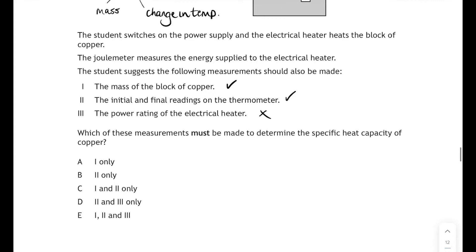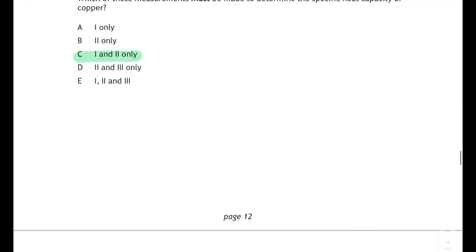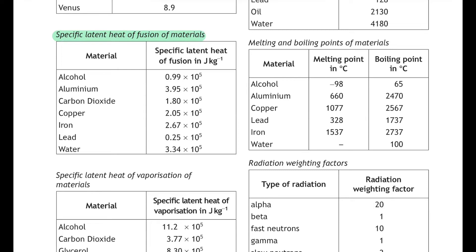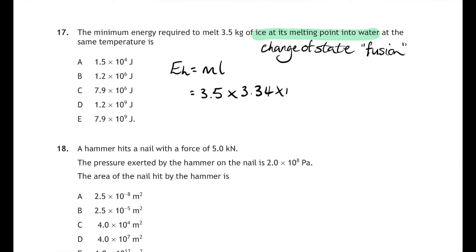Moving on then, question 17: the minimum energy required to melt 3.5 kilograms of ice at its melting point into water at the same temperature. Well, this is a change in state question, and it's the solid to liquid or fusion state change. So let's write the relationship down: E_h equals ml. m is the mass 3.5, and l is the specific latent heat of fusion of water. So we're looking for that number 3.34 times 10 to the 5 joules per kilogram. Let's sub that in, and if you do that on your calculator, you'll get an answer of 116,900 joules, which if you put in the standard form and round correctly is 1.2 times 10 to the power of 6 joules, and that corresponds to answer B.